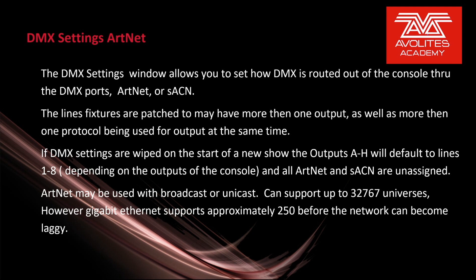If DMX settings are wiped on the start of a new show, the outputs A through H will default to lines 1 through 8 depending on the outputs of the console, and all Artnet and Streaming ACN lines are unassigned. Artnet may be used with Broadcast or Unicast, and can support up to 32,767 universes. However, Gigabit Ethernet supports approximately 250 before the network becomes saturated.